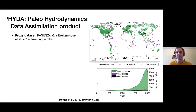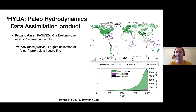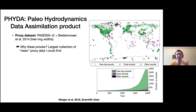For proxy data, we use the PAGES 2K version 2 plus a collection of tree ring widths by Breitenmoser et al. We have roughly 3,000 proxies, though that number drops off in time. We chose these because it's the largest collection of clean proxies that we could find — by clean, I mean consistently standardized, easy to incorporate in the framework, available in coherent databases without having to go to individual proxy papers.